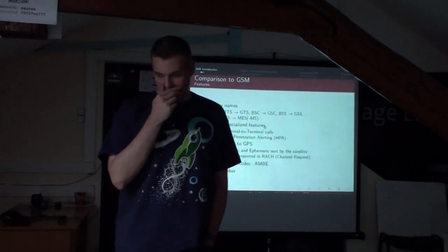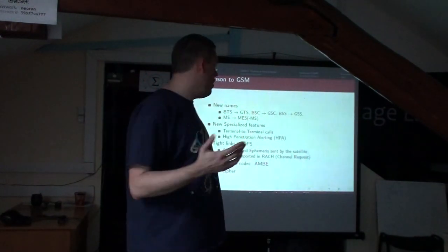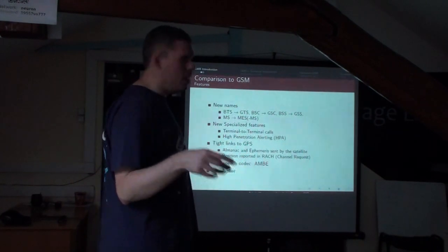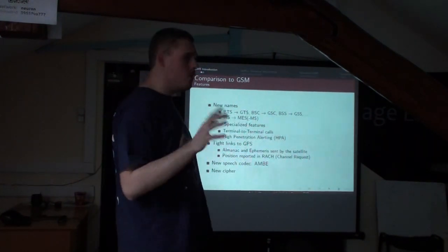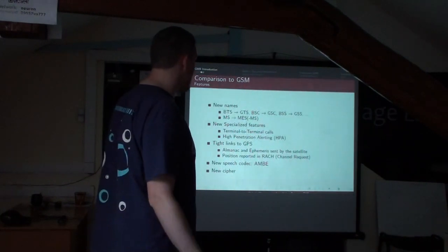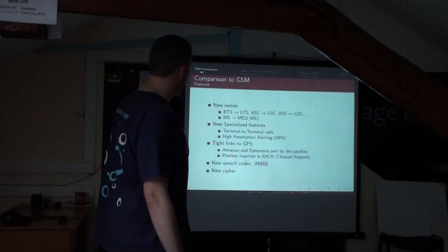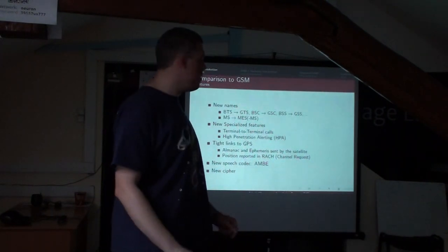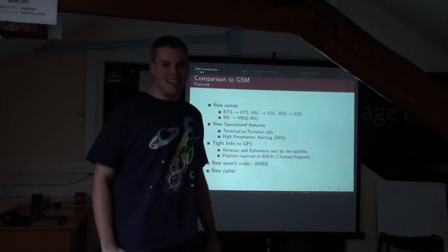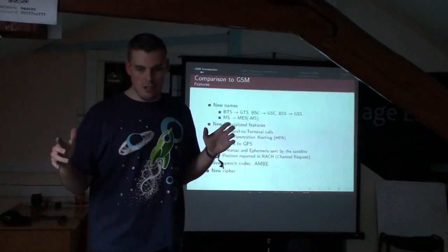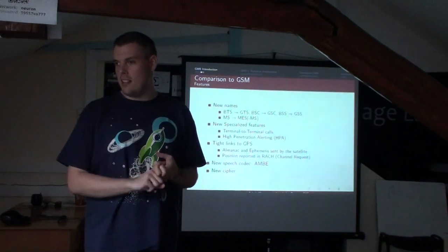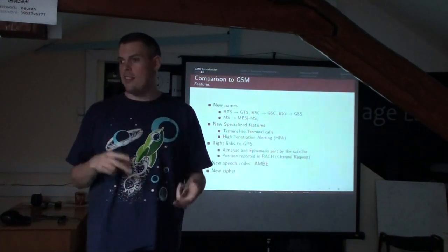A comparison with GSM: it's very similar. All the terms you know in GSM, you add a 'G' in front and get the GMR equivalent. BTS becomes GTS, BSC becomes GSC, BSS becomes GSS, and so on. The MS is a little special — it becomes MES for mobile earth station. The specifications also have a whole section about aeronautical stations, fast-moving planes, with calculations for Doppler effect.